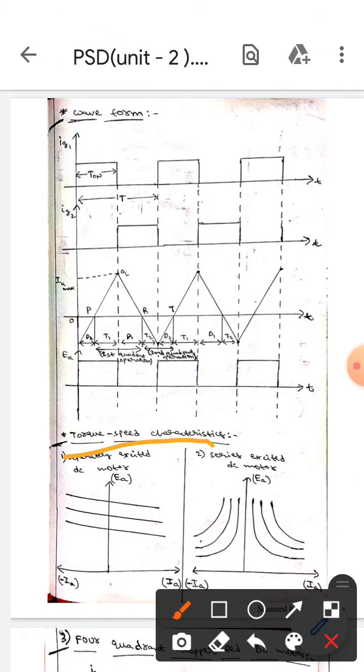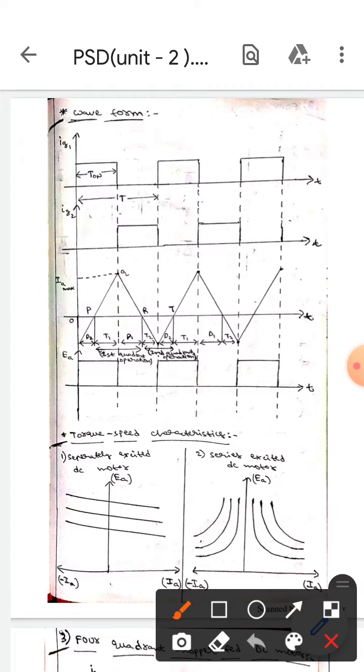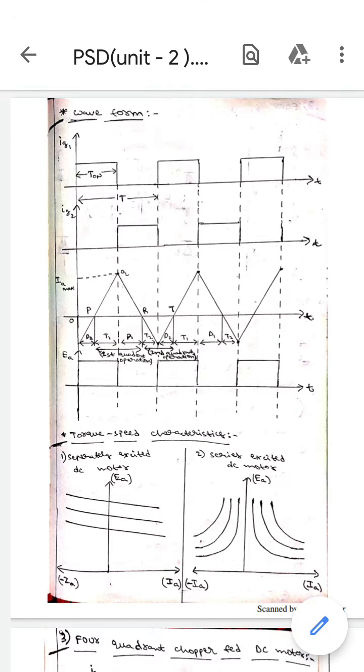This is the torque-speed characteristics. The first diagram is the torque-speed characteristics of separately excited DC motor, where the second diagram represents the torque-speed characteristics of series excited DC motor. I hope you understand guys, thank you.